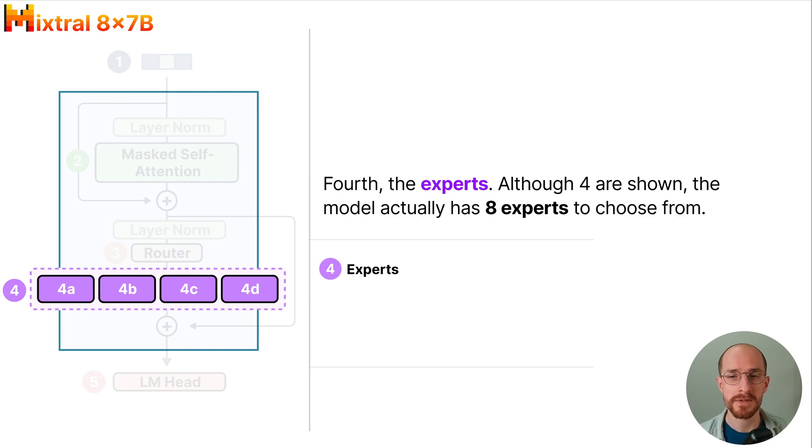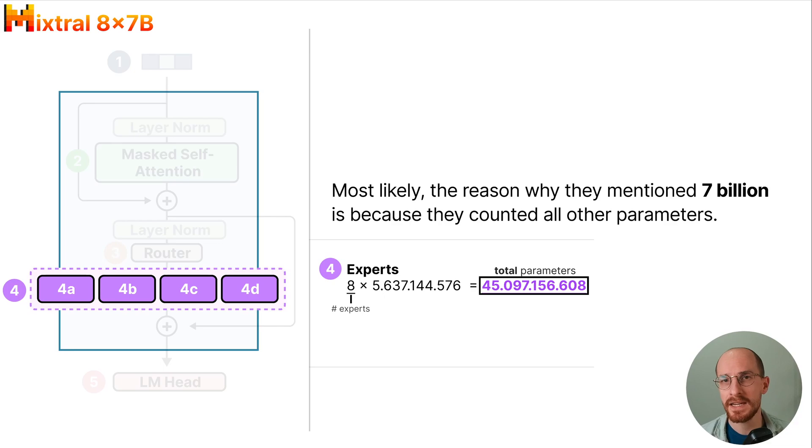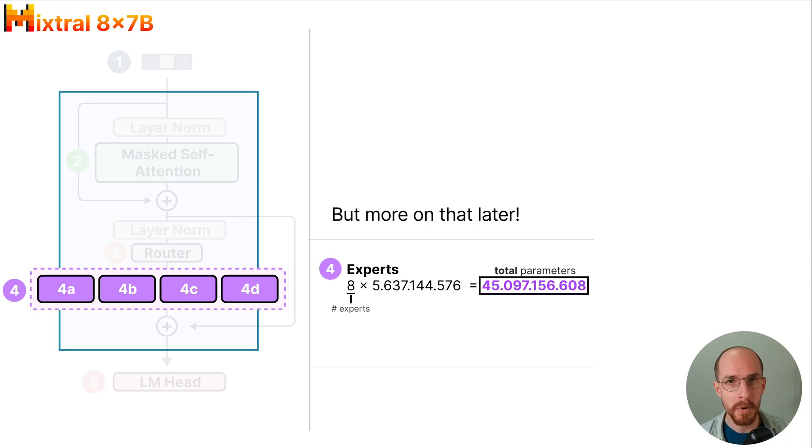Fourth are the experts. Although 4 experts are shown in this image, the model actually has 8 experts to choose from. Each expert actually has 5.6 billion parameters and not the suggested 7 billion. Most likely the reason why they mentioned 7 billion parameters is because they counted all other parameters, but more on that later.